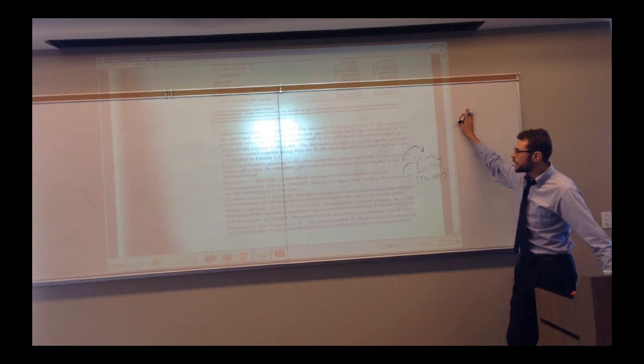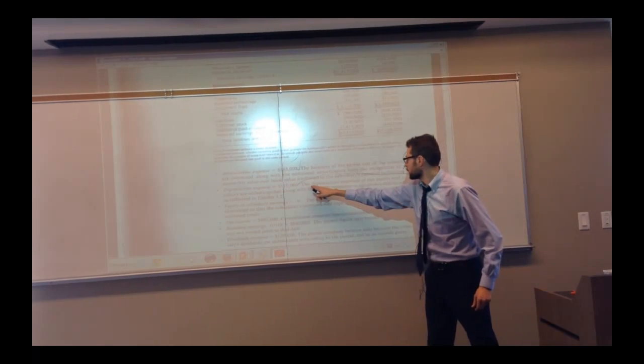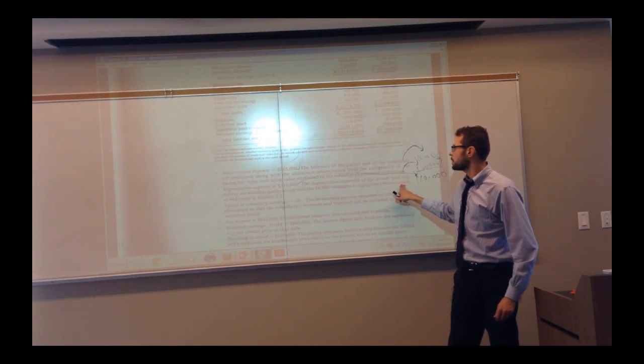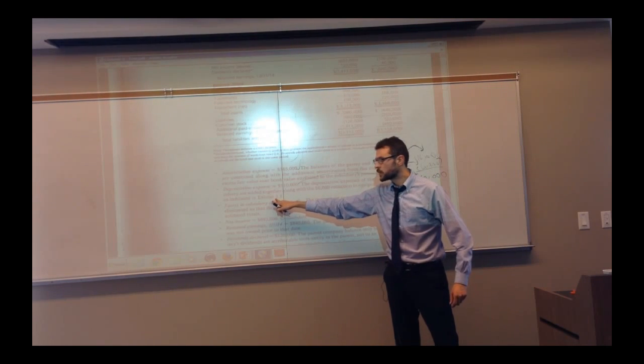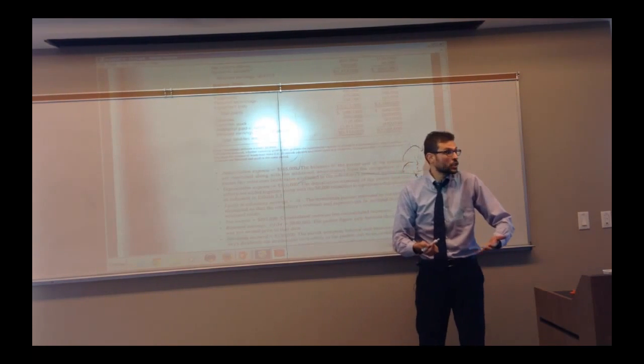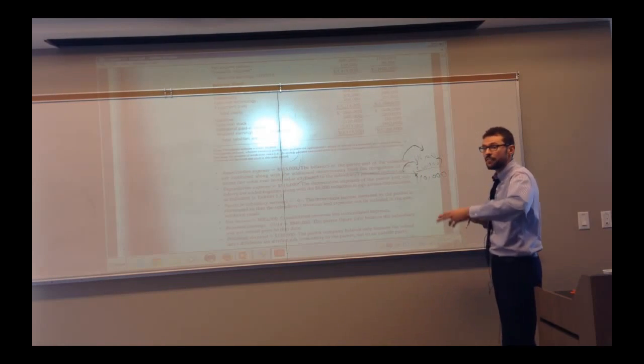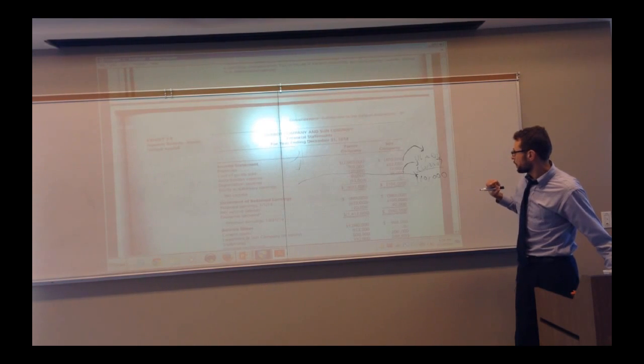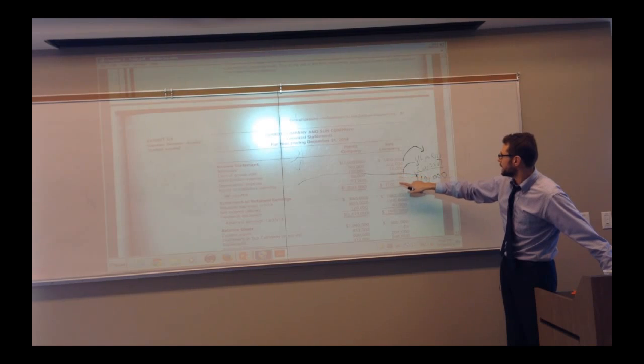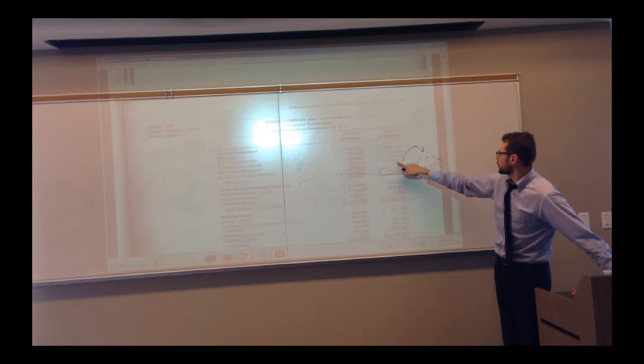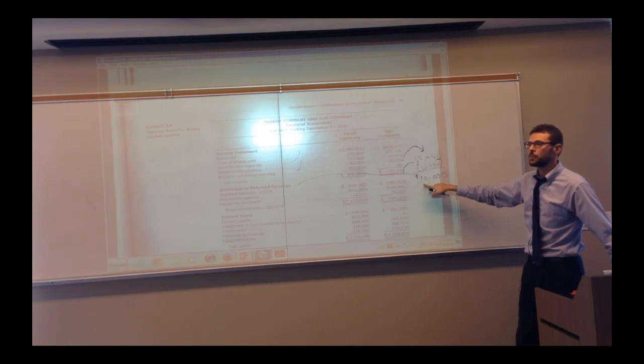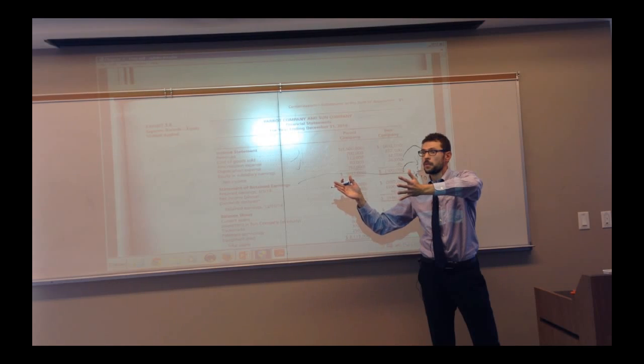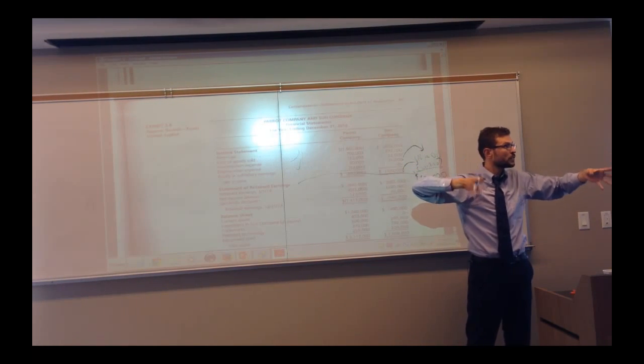And again, the $110,000 I'm getting here, the book explains exactly what happened here. The depreciation expenses of the parent and the subsidiary are added together along with the $6,000 reduction in equipment depreciation as indicated in exhibit 3.3. So we had a certain adjustment. We put it in. Again, it doesn't really affect the parent. It's the books of the consolidated report. When I add the $80,000 and the $36,000 and I'm getting $116,000, I'm getting $116,000, which subsequently becomes $110,000. Again, that's just going through the financial report on the consolidated book. It doesn't actually affect the book of the parent or the book of the subsidiary.